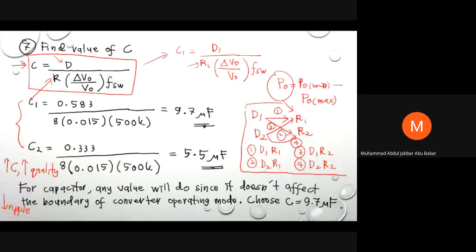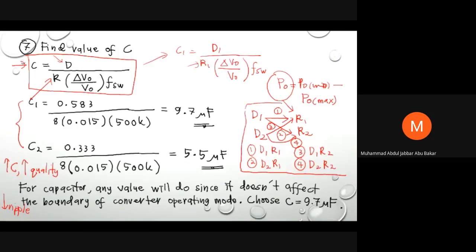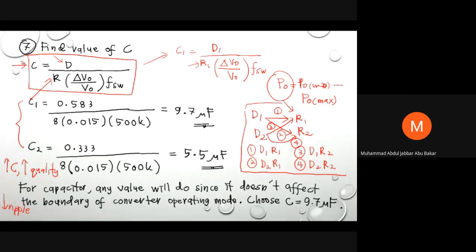In exercise number one, we have only variation of input voltage. That is why we get two values of duty cycle, two values of inductor, and two values of capacitor. If in another example the load (output power P_out) is also varied — for example from minimum to maximum — it will also affect the value of R.